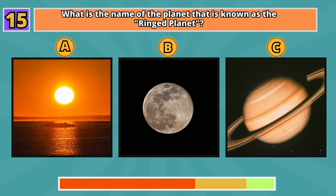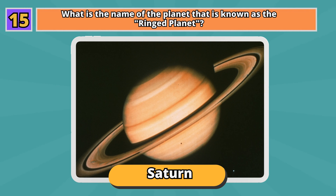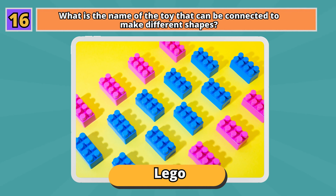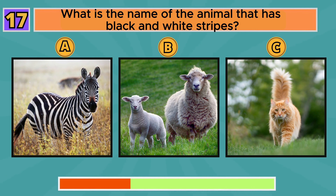What is the name of the planet that is known as the ringed planet? Saturn. What is the name of the toy that can be connected to make different shapes? Lego.